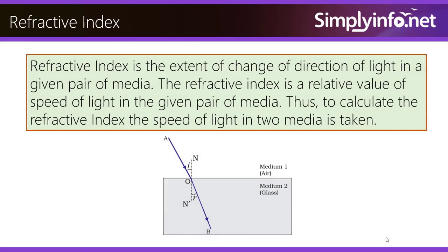Refractive index is the extent of change of direction of light in a given pair of media. The refractive index is a relative value of speed of light in the given pair of media. Thus, to calculate the refractive index, the speed of light in two media is taken.